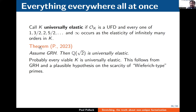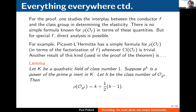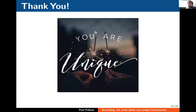This theorem is perhaps a little weaker than what you might expect. I suspect the correct condition is that every viable field K is actually universally elastic — viable was defined to ensure elasticity 1 holds infinitely often. That would follow from GRH and some plausible hypotheses on certain primes. But I can't quite prove it. Thank you for your attention.